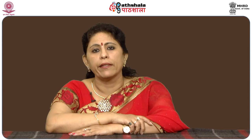To define second language acquisition in the words of Klaim: a language is first and so it is acquired if no other language was acquired before; otherwise it is second. Thus the mother tongue, acquired primarily by a child when his language cells are empty, is his first language L1, and the language acquired in addition to L1 is the second language or L2.